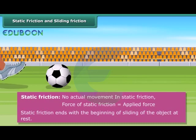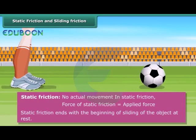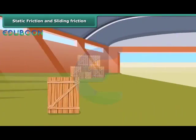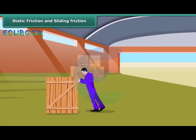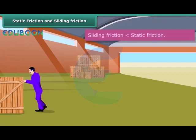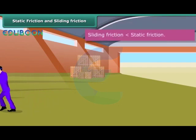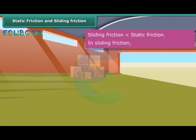When we push the ball, it starts moving. The frictional force present when one body moves slowly or slides over another body is known as sliding friction. Once a body slides, the sliding friction is reduced a little — it is less than the static friction. In sliding friction, the force of sliding friction is equal to the constant pull force.